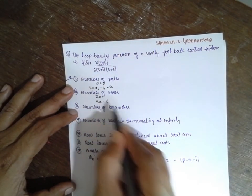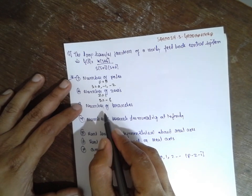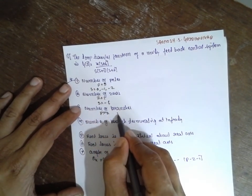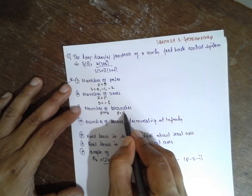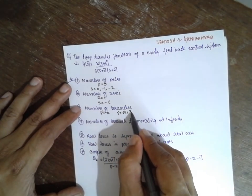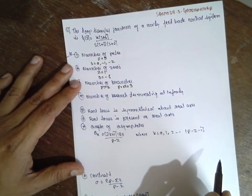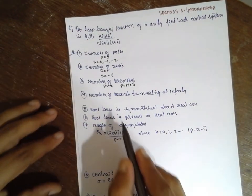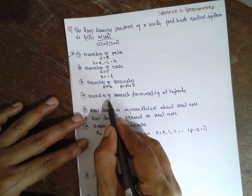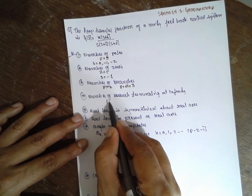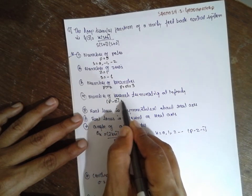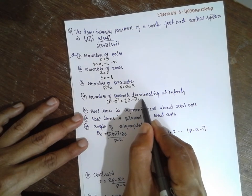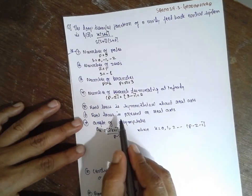Number of branches: P is greater than Z, therefore P is equal to N, which is nothing but 3. Number of branches terminating at infinity: P minus Z — P is 3, Z is 1, which is 2. Number of branches terminating at infinity is 2.